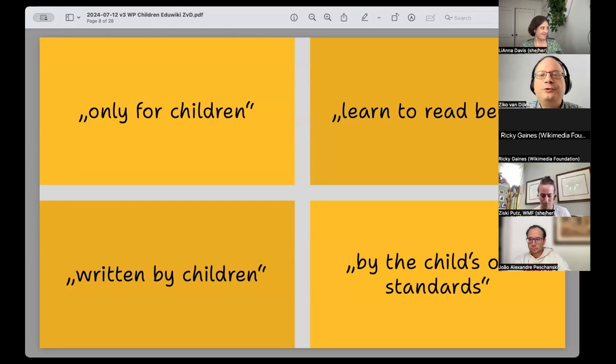One, a university student once told me that writing for a children's encyclopedia couldn't be that difficult, because it is only for children. Two, a new volunteer wrote an article for the Klexicon. I tried to explain to the gentleman that the text was far too complicated. He said that his text was excellent. If some children find it too difficult, they should learn to read better.